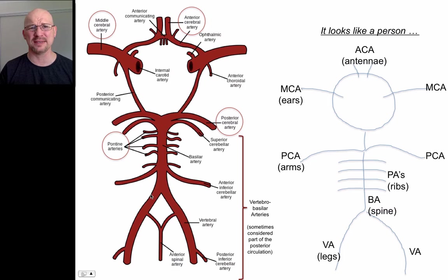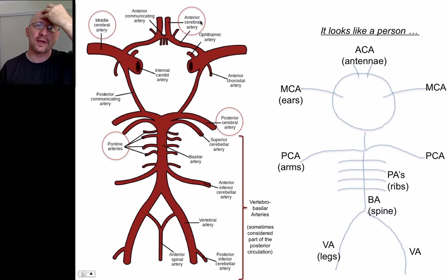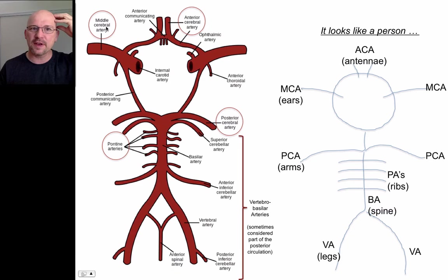There are three or four major things that I need to know. The front of our brain is fed by an artery called the anterior cerebral artery. The anterior part of the brain is fed by the anterior artery. What's the middle part fed by? The middle part is fed by the middle cerebral artery. And what's the posterior part fed by? It's fed by the posterior cerebral artery.